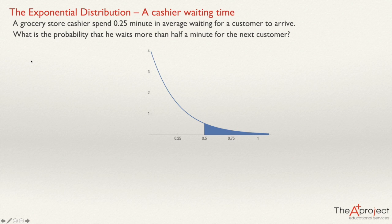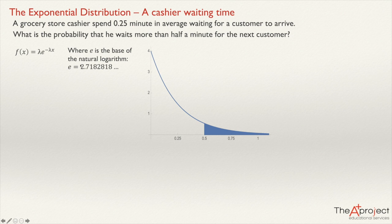The probability density function is f(x) = λe^(−λx). Lambda is the parameter of the exponential distribution, and e is the well-known base of the natural logarithm, approximately 2.71828. We also know that lambda equals 1 over the mean. This lambda is actually the same as the Poisson parameter.